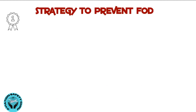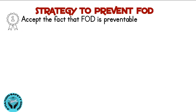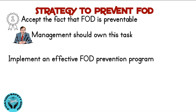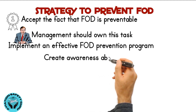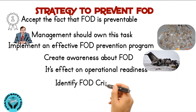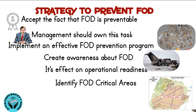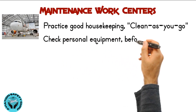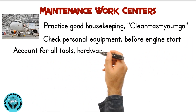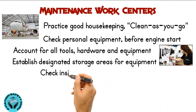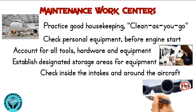Strategy to prevent FOD: First of all, accept the fact that FOD is preventable. Therefore, management should own this task. Implement an effective FOD prevention program. Create awareness about FOD and its effect on operational readiness. Identify FOD critical areas on the airfield and at maintenance work centers. Practice good housekeeping — clean as you go. Check personal equipment before engine start. Account for all tools, hardware, and equipment. Establish designated storage areas for equipment. Check inside the intakes and around the aircraft for FOD.